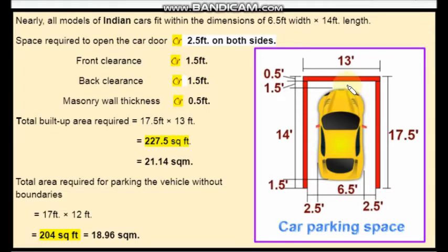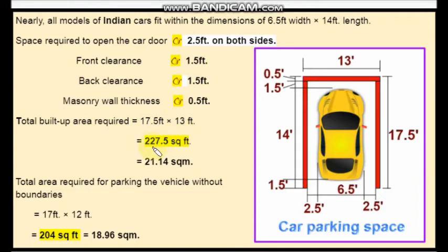These are the minimum requirements. Back clearance is 1.5 feet. So the total length required will be 17.5 feet with 13 feet width. Total built-up area required is equal to 17.5 feet by 13 feet, that is equal to 227.5 square feet.